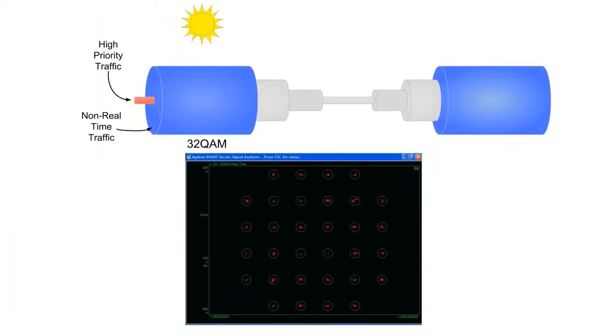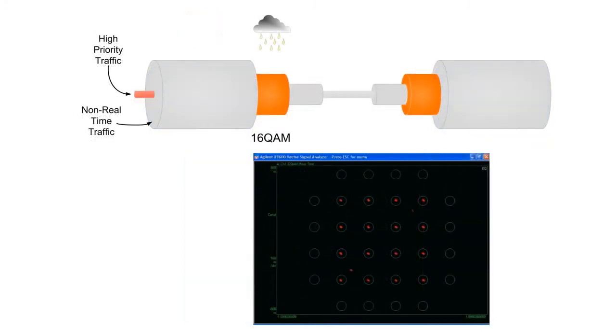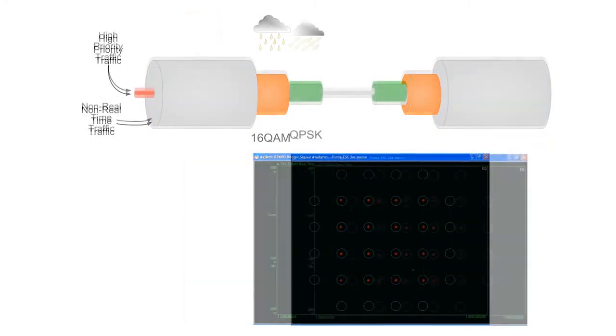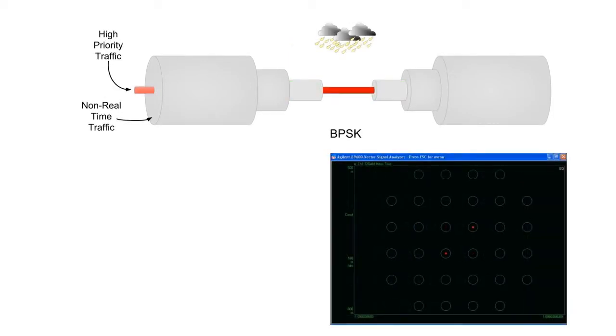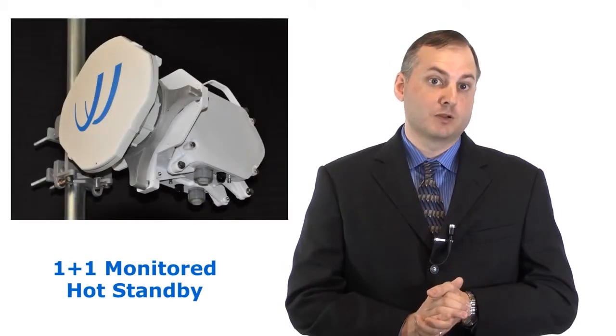Flex4G provides automatic transmit power control and hitless adaptive modulation to ensure maximum system availability for all traffic and protected throughput for the highest value traffic on the network.